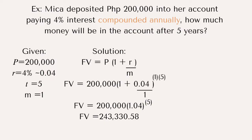Example number 1: Mika deposited 200,000 into her account paying 4% interest compounded annually. How much money will be in the account after 5 years? The given: principal is 200,000, rate is 0.04, time is 5, and M is 1. The formula is FV equals P times (1 plus R divided by M) raised to M times T. Solving the parenthesis: 0.04 divided by 1 plus 1 equals 1.04. And 5 times 1 equals 5. So 200,000 times 1.04 raised to the 5th power equals 243,330.58 pesos.